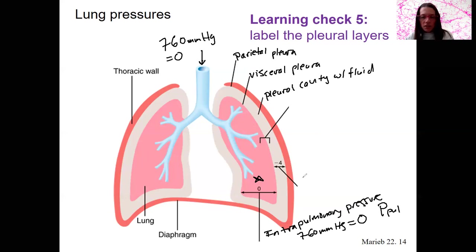This pressure right here, this is intrapleural pressure, also called PIP, pressure intrapleural. It is always negative to intrapulmonary pressure, minus 4. So in this case, it'd be 756 millimeters of mercury, which is negative 4 compared to both the atmosphere here and the inside the lungs.